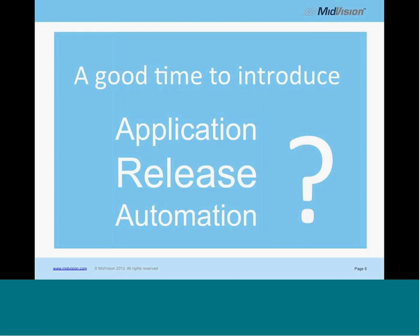What you often get asked is when is the best time to do application release automation. The best time really is when you're considering going from one version of the technology to the other. Developers would often use Liberty for quick development and testing, maybe through a couple of test environments. But at some point, if you're going into a full enterprise environment with high availability servers, you'll want to transfer the configuration from your Liberty Profile into your ND or VE profile. Having a tool that can move this configuration from one profile to the other is quite useful.